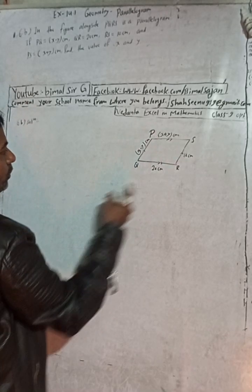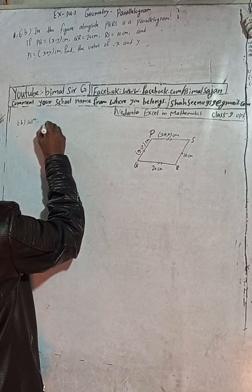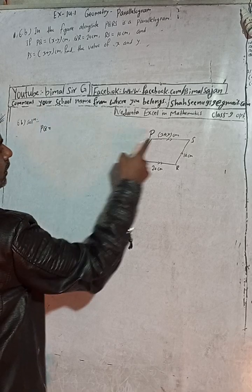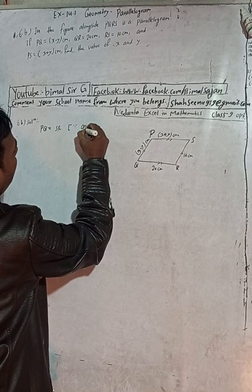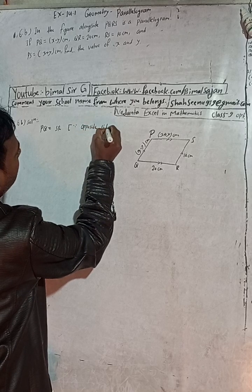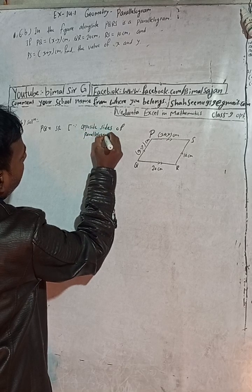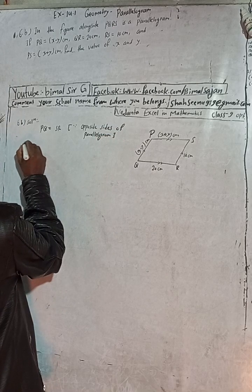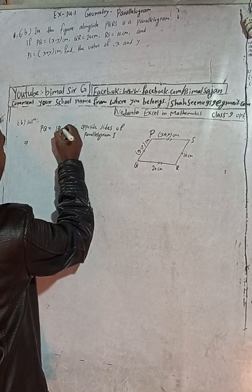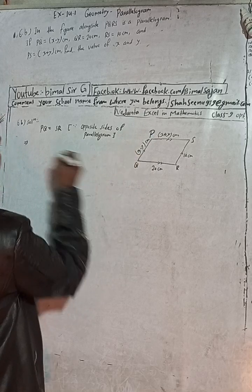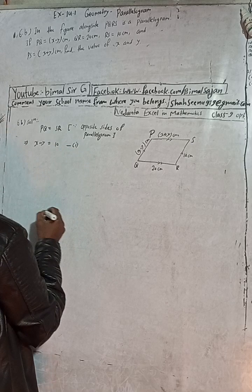First, I will use the property that PQ is equal to SR. The reason for this is that opposite sides of a parallelogram are equal. So PQ is x minus y, therefore x minus y is equal to SR which is 10. Suppose this is our Equation 1.